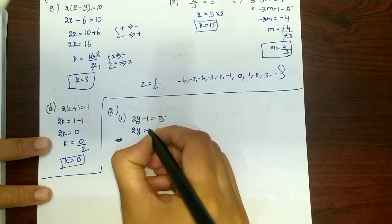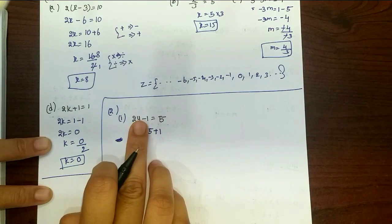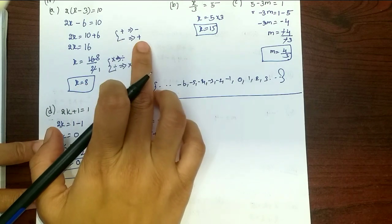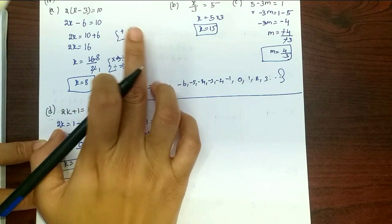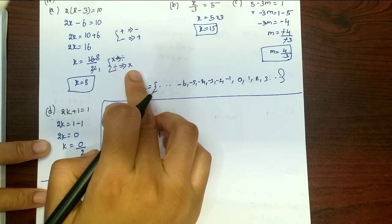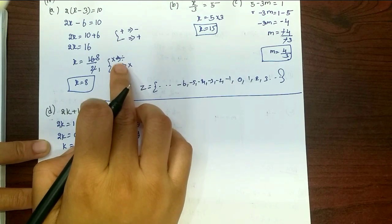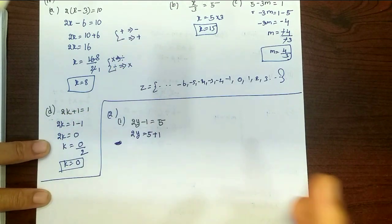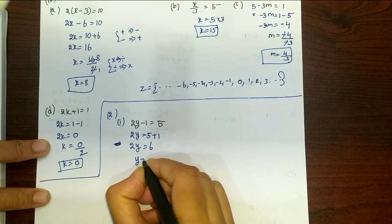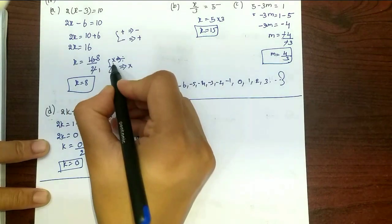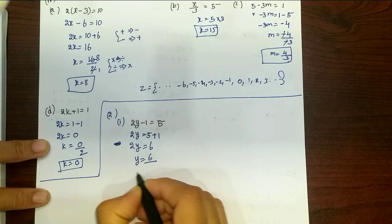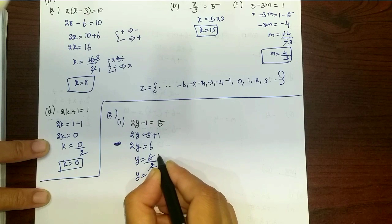So, 2y is equal to 5 plus 1, which is equal to 6. So y is equal to 6 divided by 2. Transposing the multiplication to division, 2y equals 6, so y equals 3.